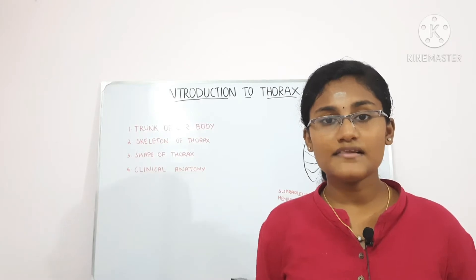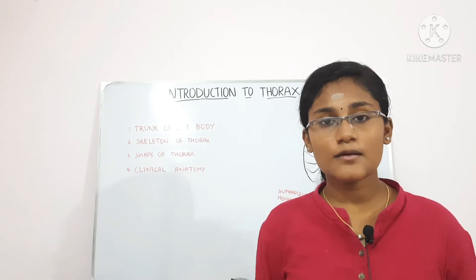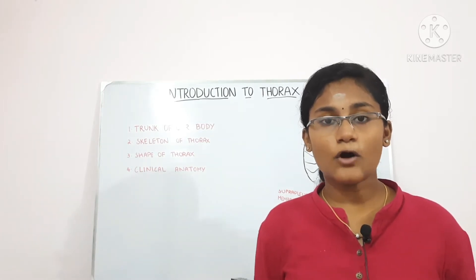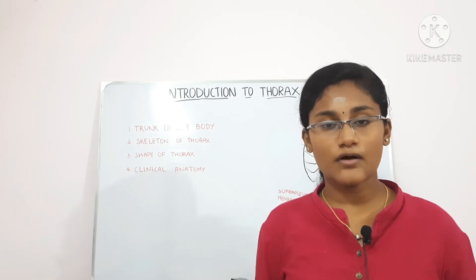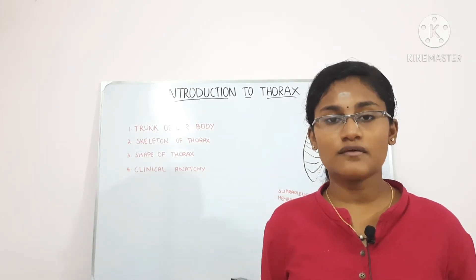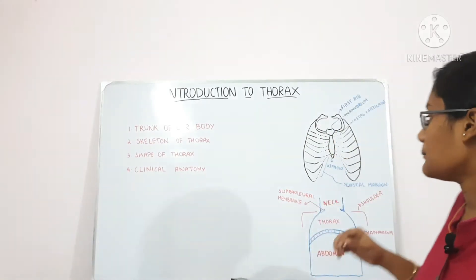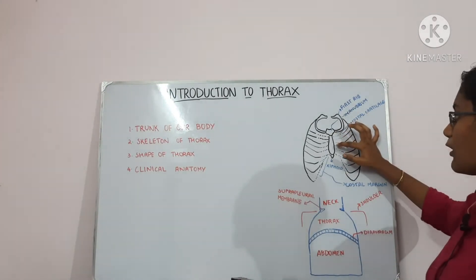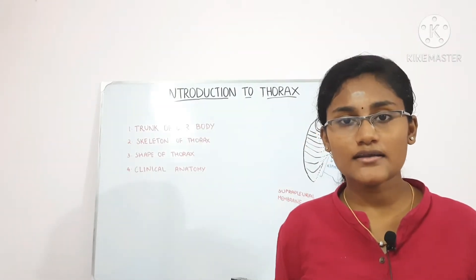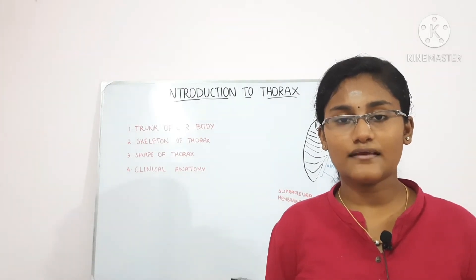The 11th and 12th ribs are free anteriorly and attach posteriorly to the vertebral column, so they are called vertebral ribs or floating ribs. The vertebrochondral ribs and vertebral ribs are called false ribs because they do not attach to the sternum anteriorly. The manubriosternal joint, chondrosternal joint, and costovertebral joints all together help in the movements of the thoracic cavity during breathing.